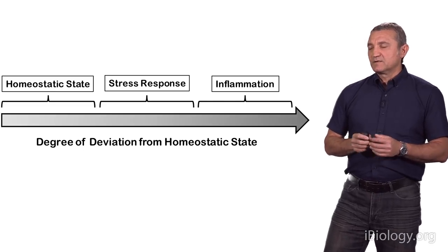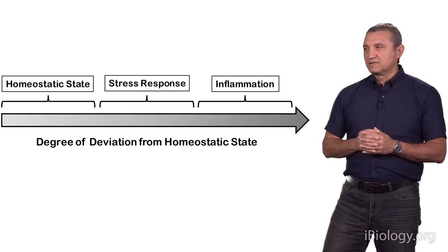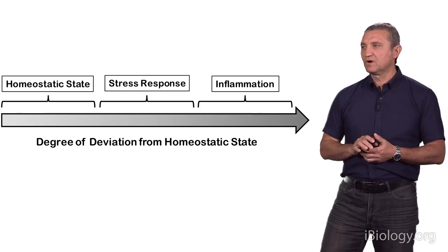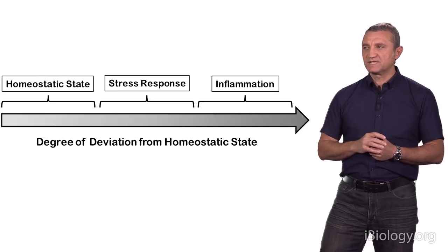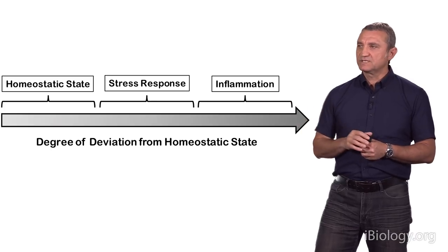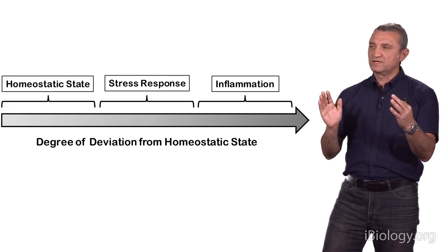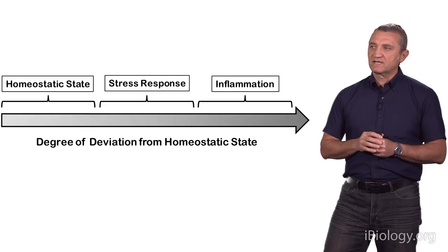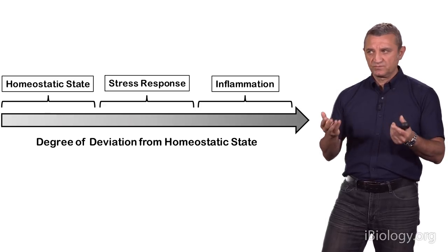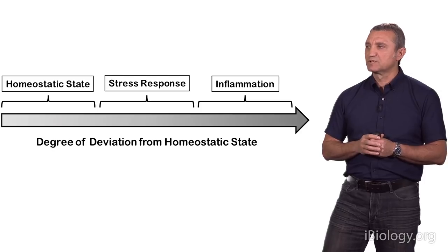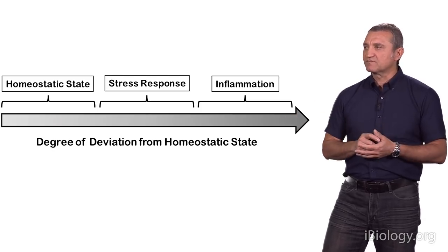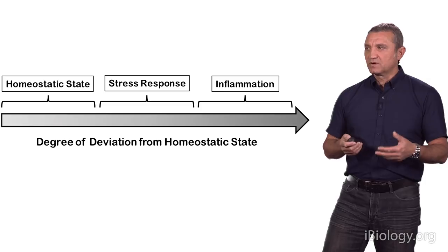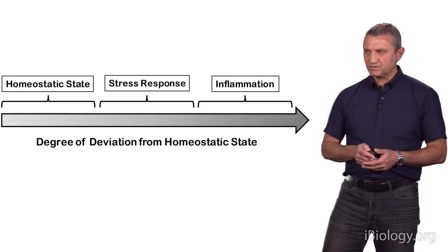Taking Mechnikov's idea and looking from different dimensions, we can summarize it as the spectrum of degrees of deviation from homeostatic states. On the left side is the range of conditions within the homeostatic state. If the system deviates far enough from that, we call it a stress response, or physiological inflammatory response. And if it deviates much further, that's what we call inflammation proper. Any deviation from normal state, therefore, can lead to the induction of the inflammatory response.